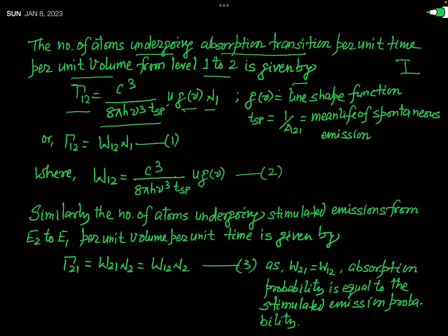In this expression, U is the energy density, g(nu) is called the line shape function, and T_SP — as discussed in the previous lecture — is the reciprocal of the Einstein A coefficient, called the mean life of spontaneous emission. This result for gamma 1 to 2 can be written as W12 times N1, where W12 represents the grouped constant terms shown in equation 2.